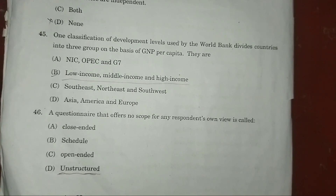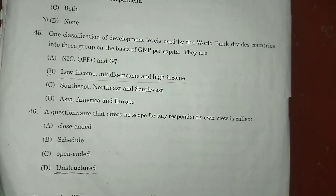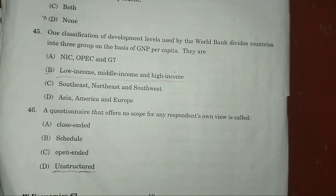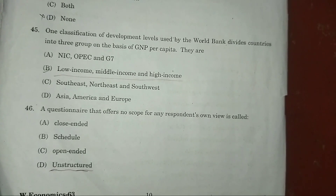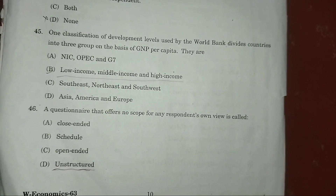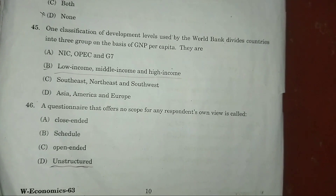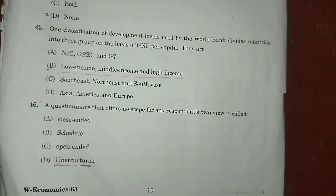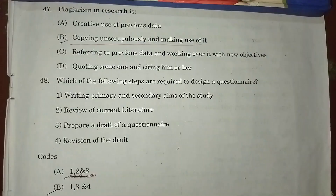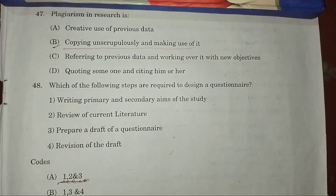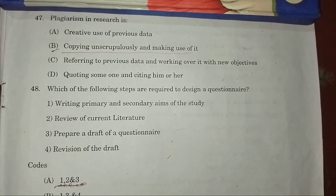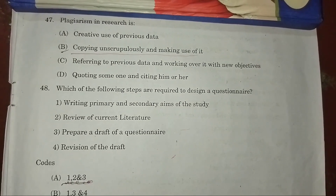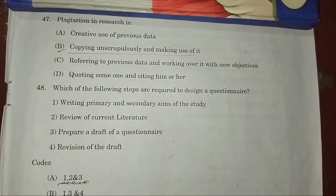Question 46: A questionnaire that offers no scope for a respondent's own view is called — answer: D — an unstructured questionnaire. Question 47: Plagiarism in research is — answer: B — copying someone else's work unscrupulously and making use of it.